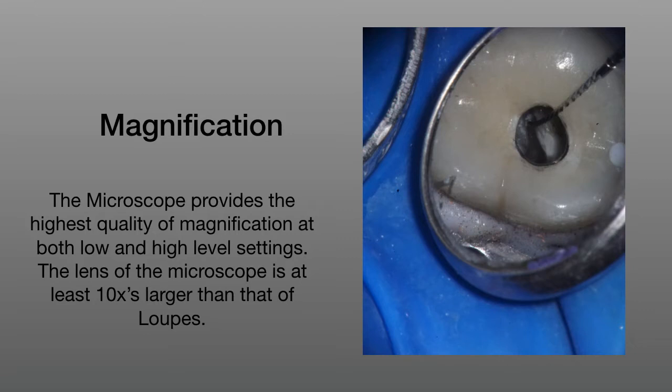Magnification. The microscope provides the highest level of magnification at both low and high level settings. The lens of the microscope is at least 10 times larger than that of loops. I started wearing loops in dental school years ago, and back then there were a lot of skeptics about loops. Now the overwhelming majority of dental students have loops because we understand the importance of magnification in dentistry. The same skepticism I heard about loops over 25 years ago is what I hear about the microscope now.